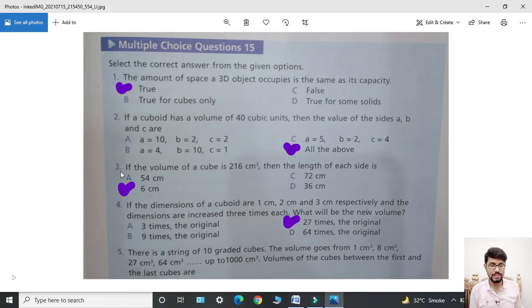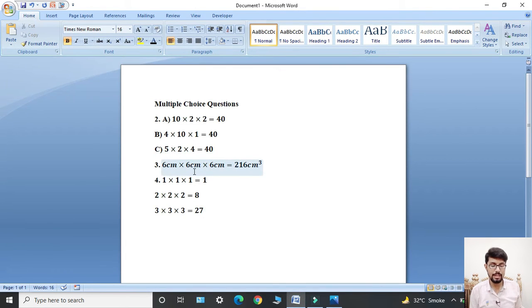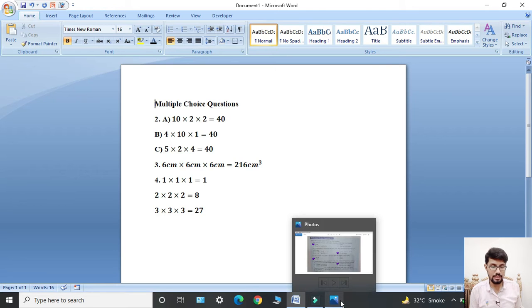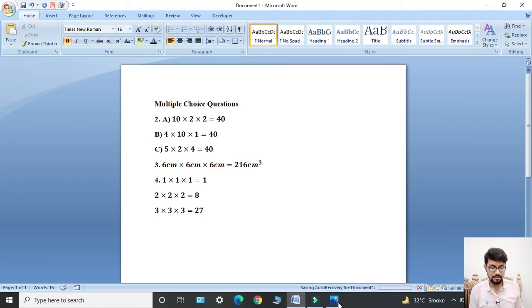Third: If the volume of a cube is 216 cubic centimeters, then the length of each side is? The smallest number is 6 centimeters. When 6 centimeters is multiplied three times, it equals 216 centimeter cube. So the correct answer is B: 6 centimeter.